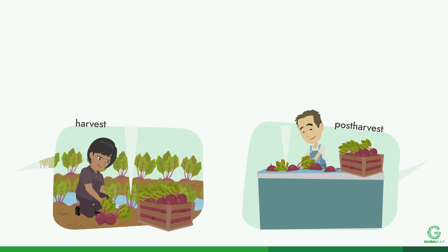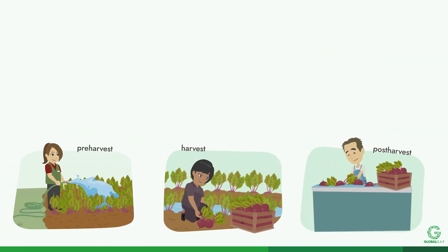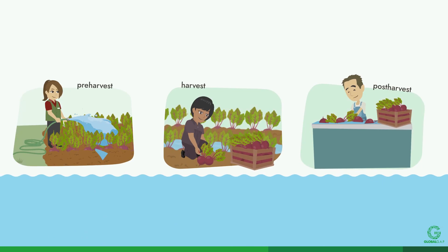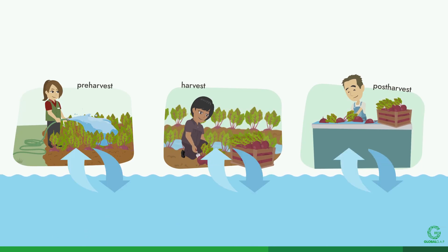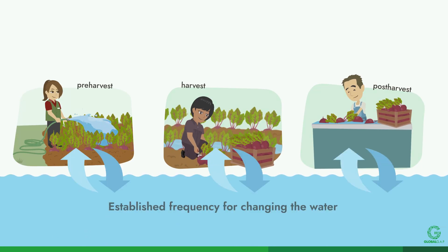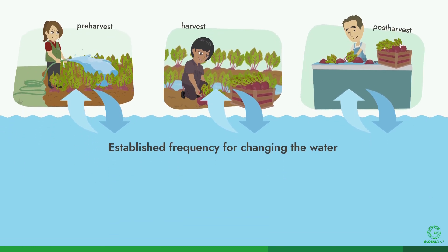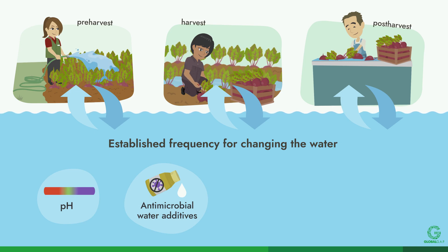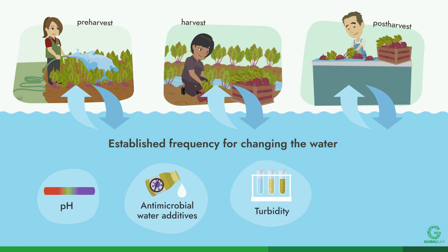If water used during fruit and vegetable production, harvest, and post-harvest activities is recirculated, there must be an established frequency for changing the water, based on applicable parameters such as pH, efficacy of antimicrobial water additives, turbidity, and visual evaluations.